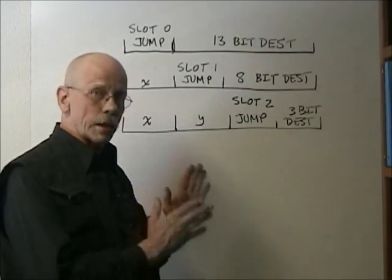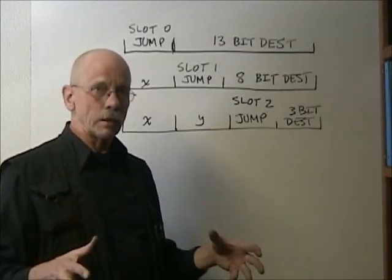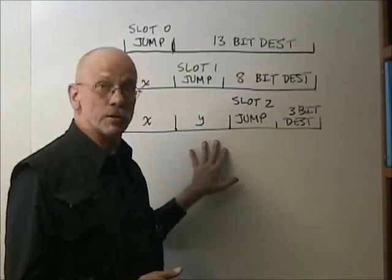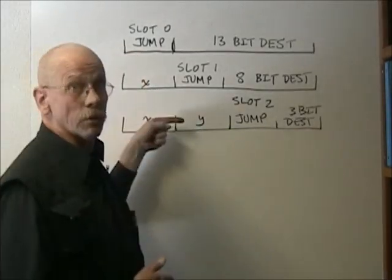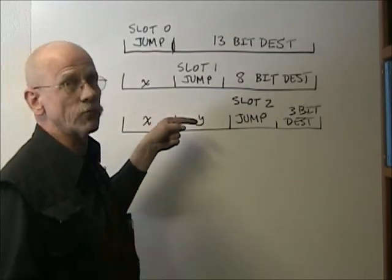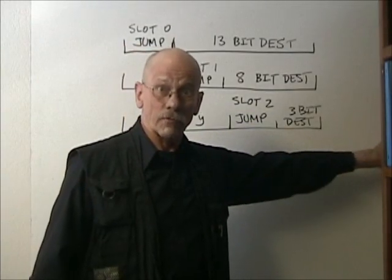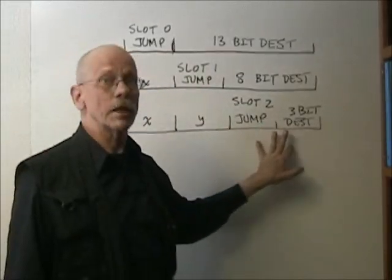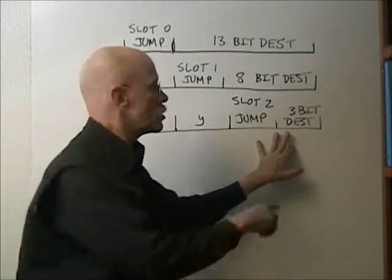What happens when a slot 2 jump is executed is that the current value of P, and notice that it will have been incremented, it's at the very least pointing at the next word because we've already fetched this word. And if there were any literals invoked in here, like standard fetch P opcodes, or store P if one's getting really risque, the P value will have been advanced further for each one of those words that were fetched using it. So whatever value P has at the time this slot 2 opcode is executed is the one whose lower 3 bits are replaced by whatever it says here.